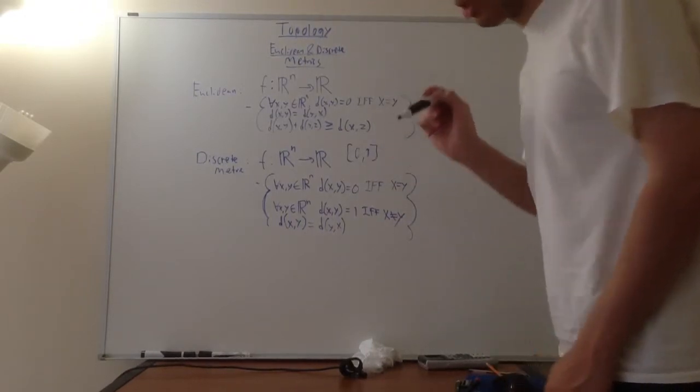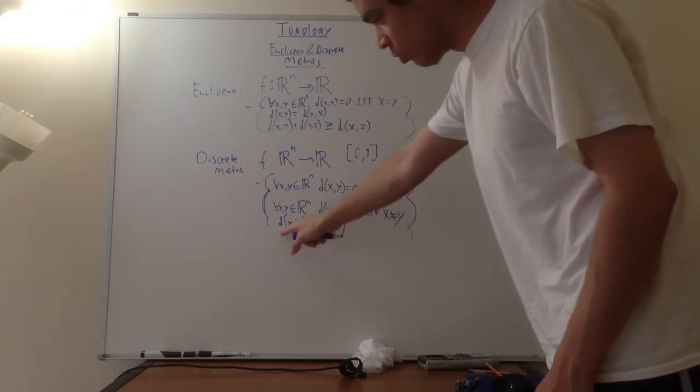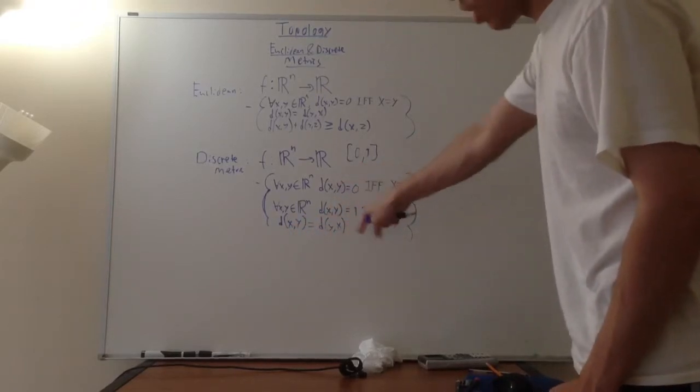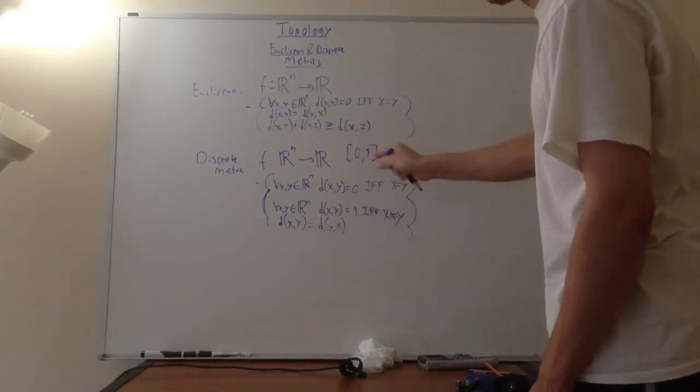And, of course, another similar property is the distance between x and y is equal to the distance between y and x. So, that's yet another similarity between the discrete metric and the Euclidean metric.